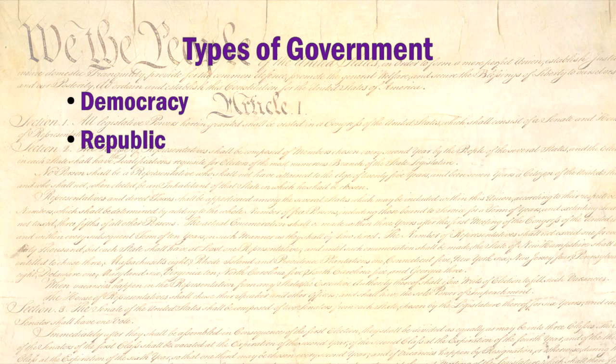We'll cover democracy and republic — their similarities, their differences, and why it's important. But in order to fully understand the issue, we also need to consider two other types of government: monarchy and oligarchy. These four basic types will give you a full perspective and context for understanding how our government is set up and why. Most other forms of government can be placed into one of these four categories — for example, a plutocracy is ruled by the rich, making it a form of oligarchy.